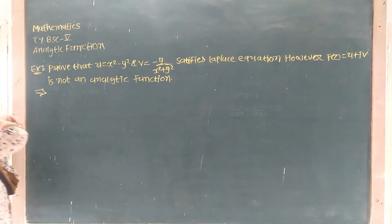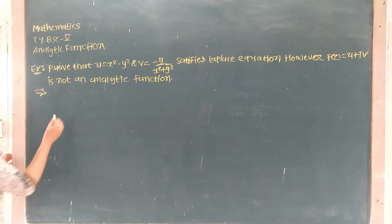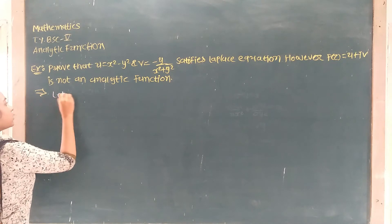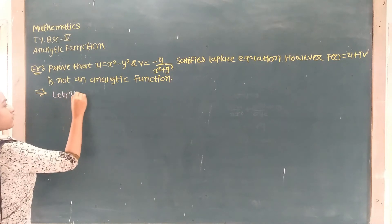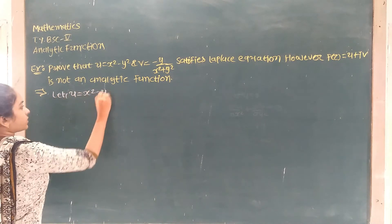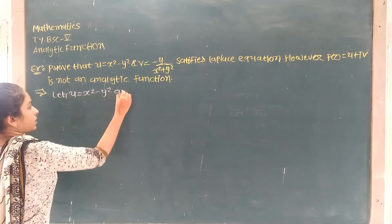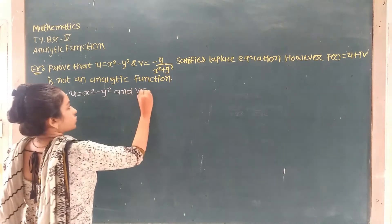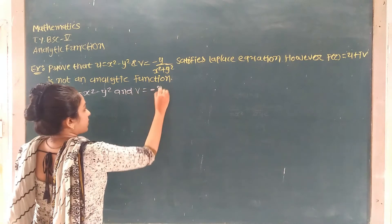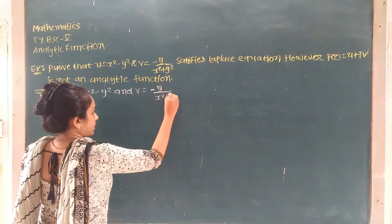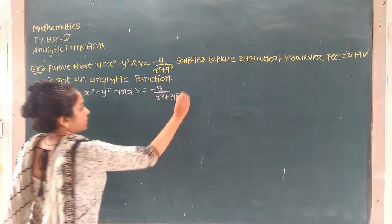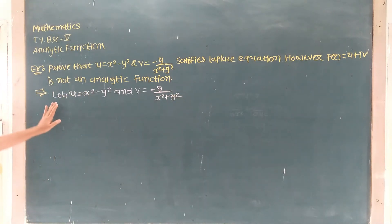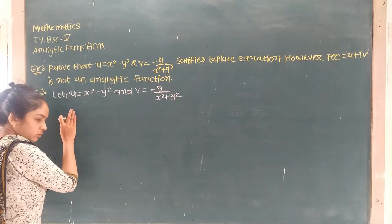For example, the question is that u is equal to x minus y squared, and v is equal to minus y over x squared plus y squared. Now, we take the derivative with respect to x, then u with respect to y.